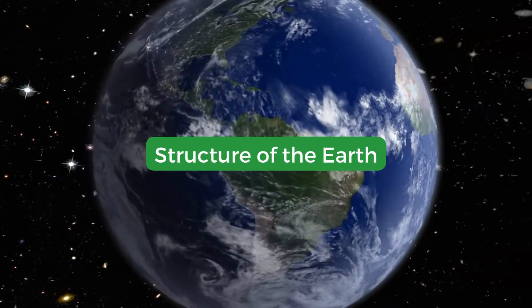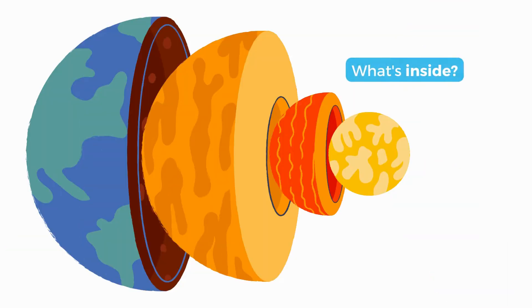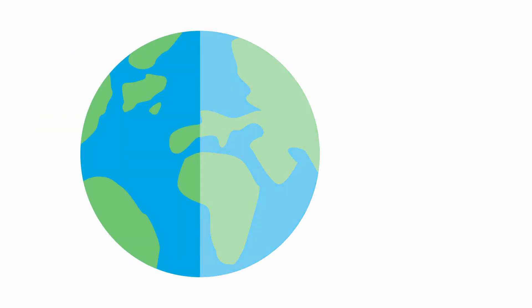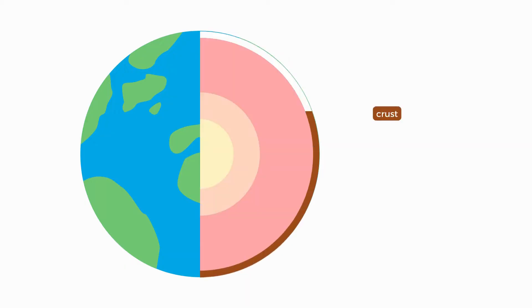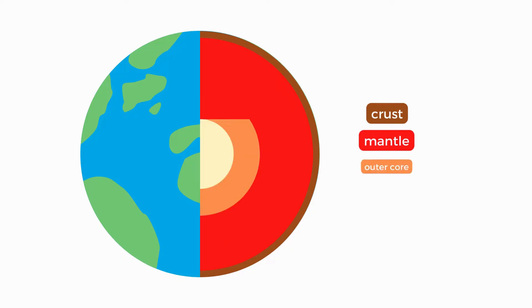Let's talk about the structure of the Earth — what's inside and how do we know. The Earth is made up of layers. At the surface we have the crust. Under the crust is the mantle. Then we have the core, which is divided into the outer core and the inner core.